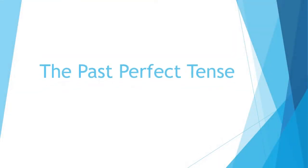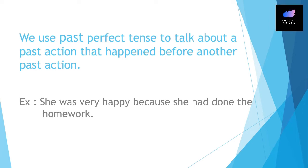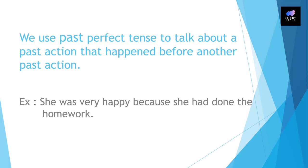Hi, welcome to my lesson. Today I am going to focus on a very important topic: the past perfect tense. First of all, let's see what the past perfect tense is and why we use it. We use the past perfect tense to talk about the past — it can be used to talk about a past action that happened before another past action. Let's see this example: she was very happy because she had done the homework.